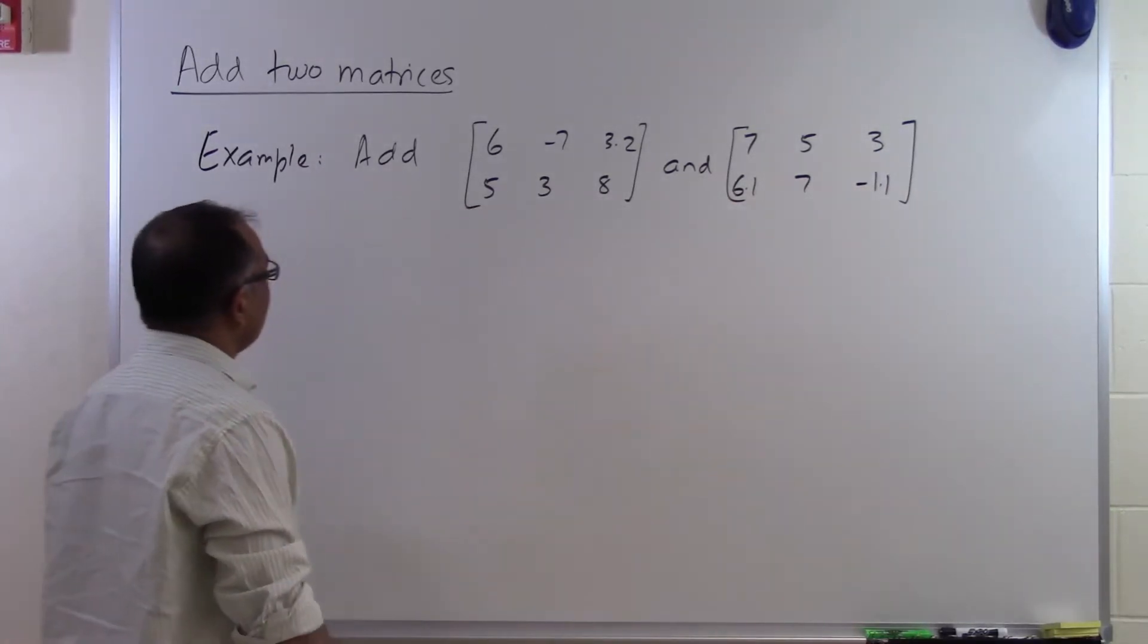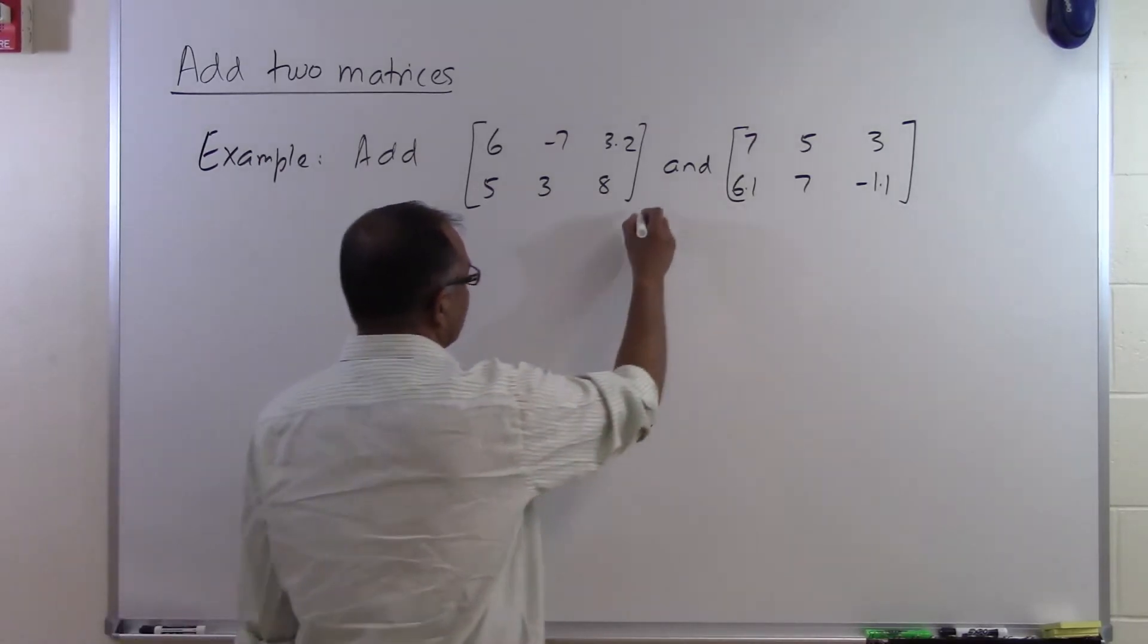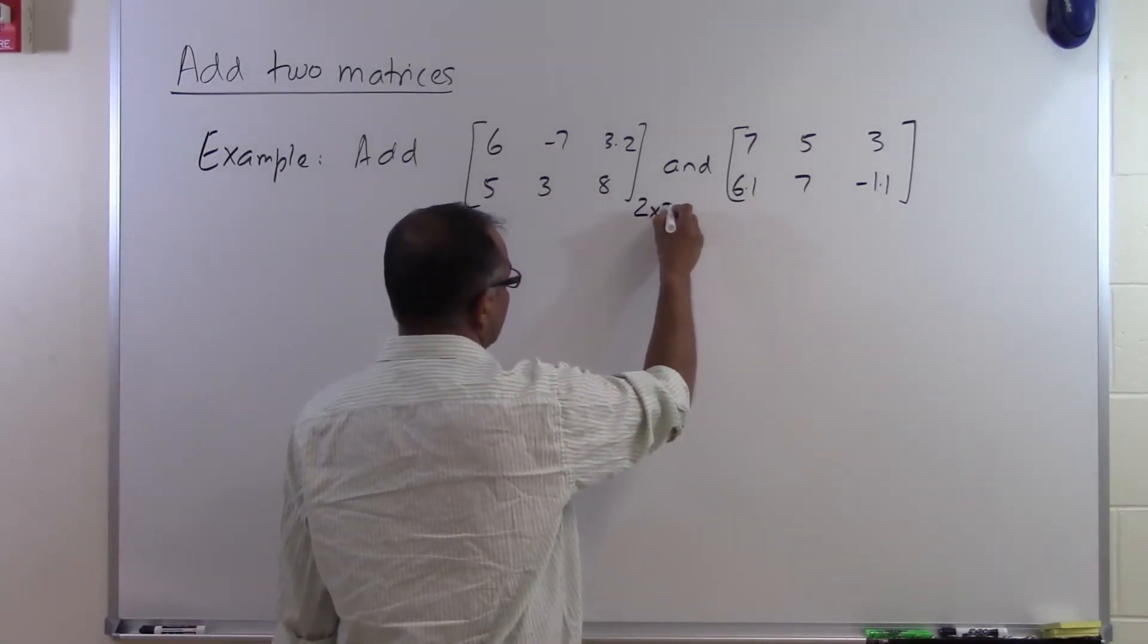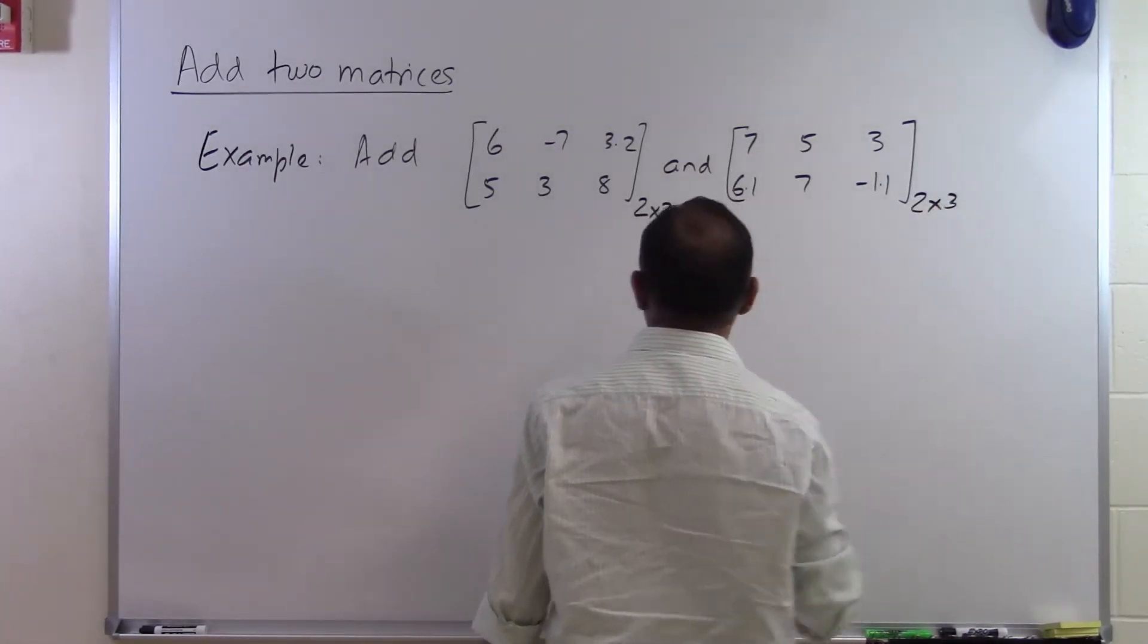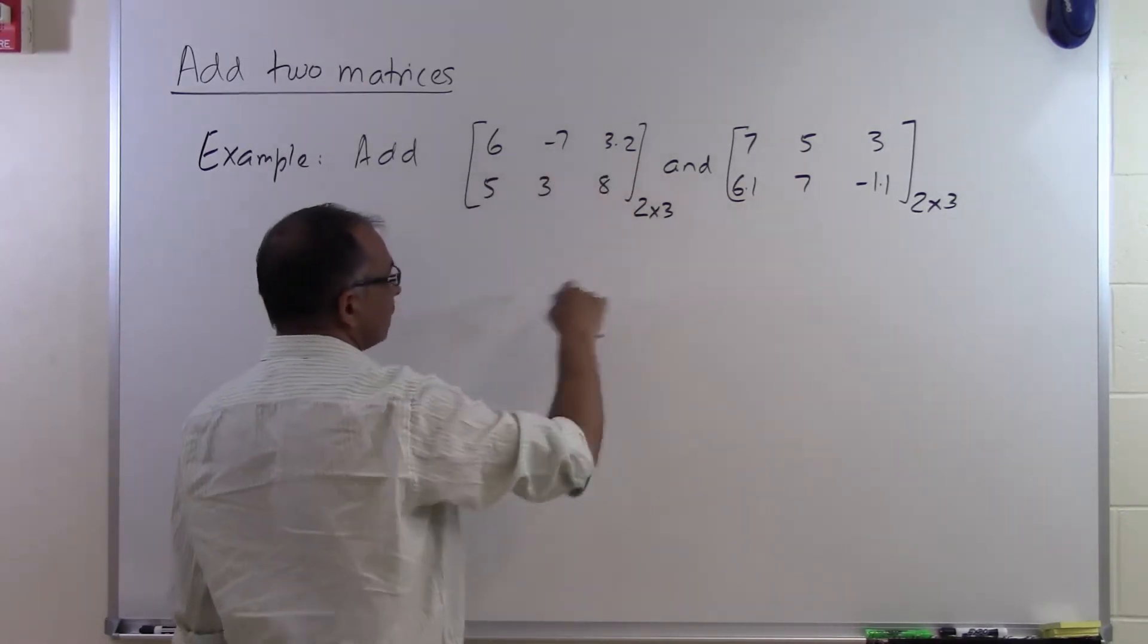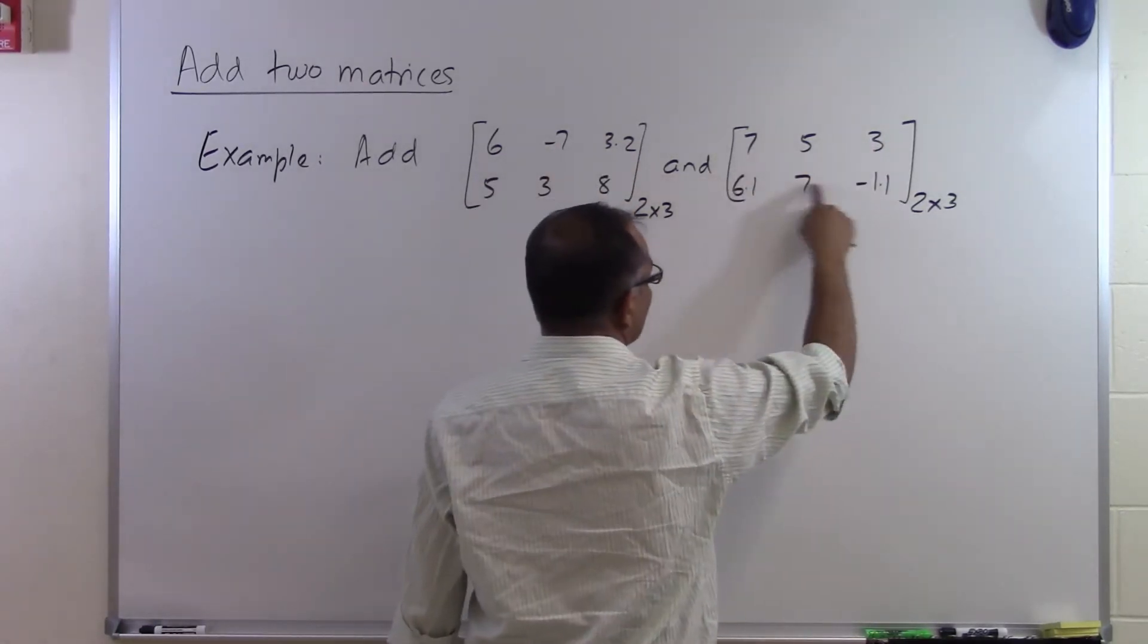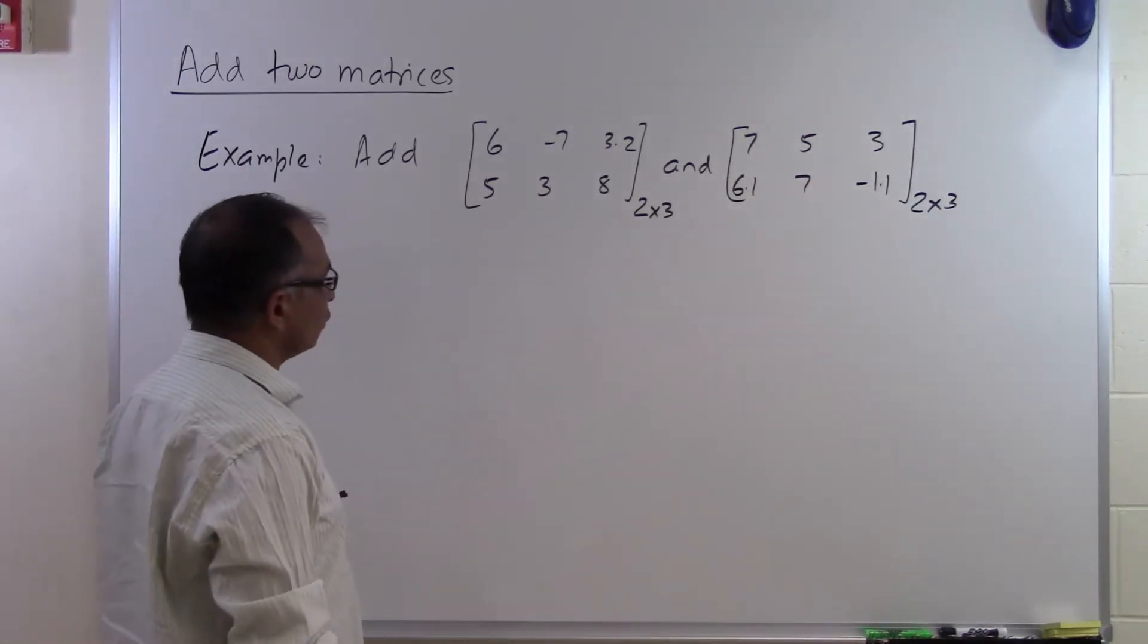We can add these two matrices because this one has two rows and three columns, and this one also has two rows and three columns. One row, two rows, three columns. Same thing here: one row, two rows, three columns.